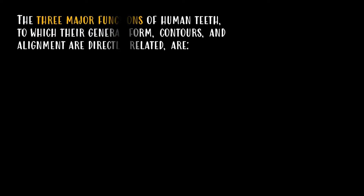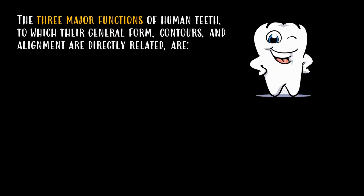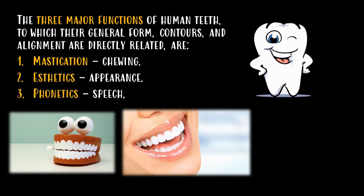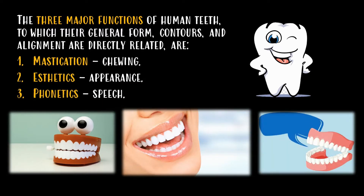The three major functions of human teeth to which their general form, contours, and alignment are directly related are mastication or chewing, aesthetics and appearance, and phonetics and speech. To best accomplish these three functions, the teeth display certain forms which align and stabilize the entire dentition and protect the teeth. Even one aberrant tooth contour may lead to the breakdown of the entire dental mechanism.